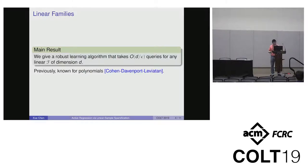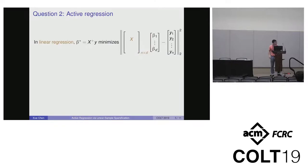Consider active regression. In the classic setting of linear regression, given a matrix X of dimension N times D and vector Y, we know beta star, the parameter vector minimizing the L2 loss ||X*beta - Y||, is just the pseudo-inverse of X times Y. However, to calculate beta star, we need to know the whole vector Y.